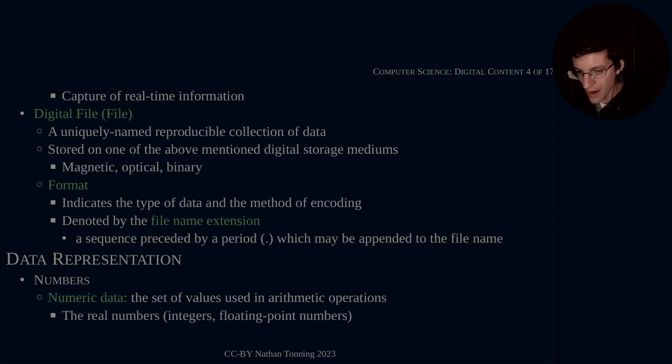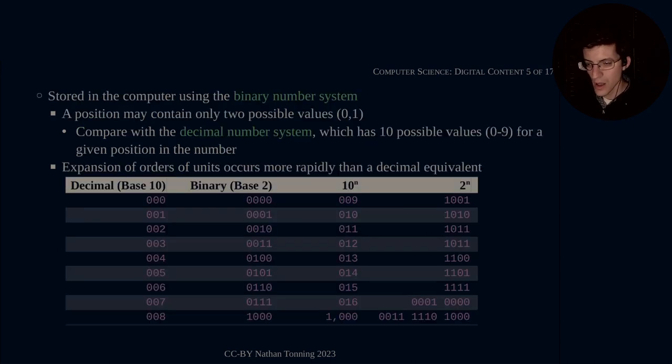Let's talk about data representation, especially with regards to numbers and numeric data. So what is numeric data in the context of digital information? It is the set of values used in arithmetic operations. These are the real numbers, so your integers and your floating point numbers. They would also be known as rational and irrational.